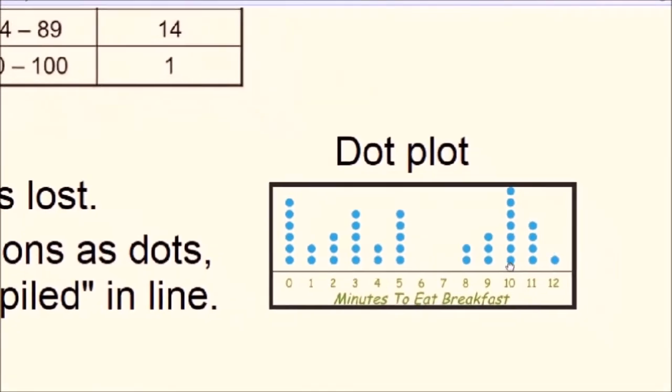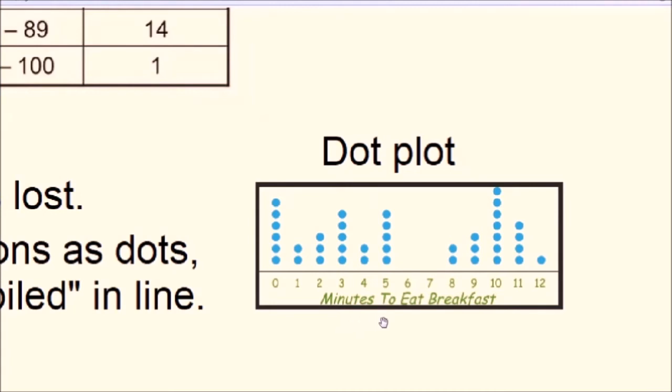In this example, we see a dot plot of how many minutes it takes to eat a breakfast, and we see that the largest number of people, which is seven in this case, take 10 minutes to eat breakfast, whereas the second largest group, six people, takes less than one minute, zero minutes, to eat that breakfast.